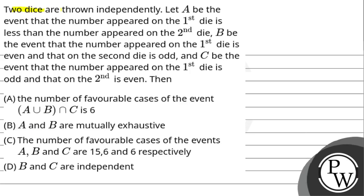Hello, let's see the question. Two dice are thrown independently. Let A be the event that the number on the first die is less than the number on the second die. B be the event that the number on the first die is even and on the second die is odd. And C be the event that the number on the first die is odd and on the second die is even.